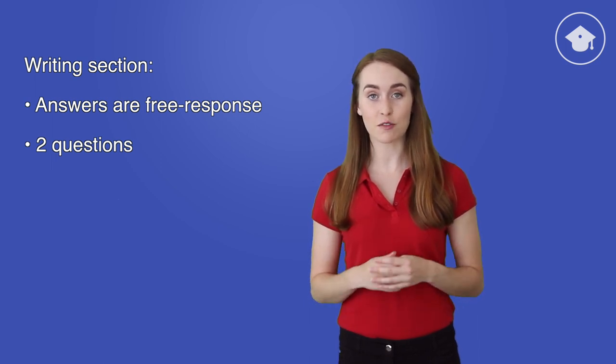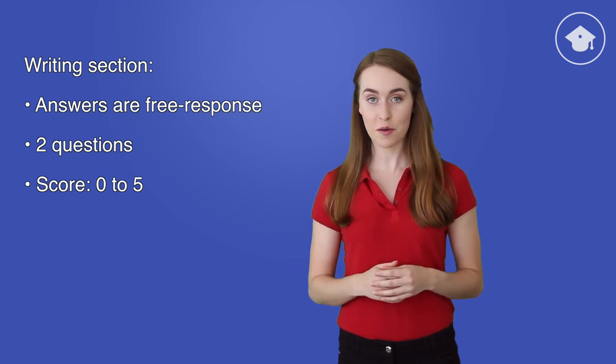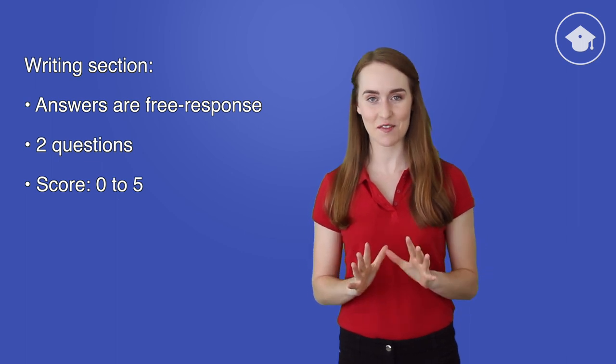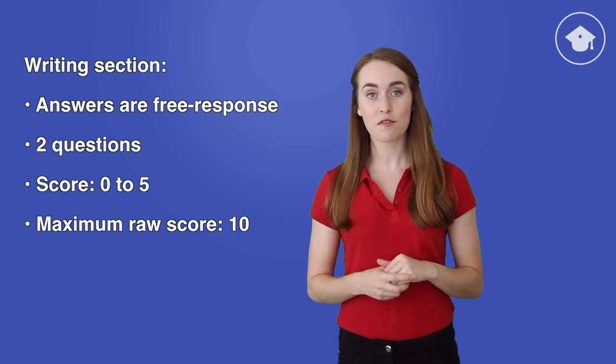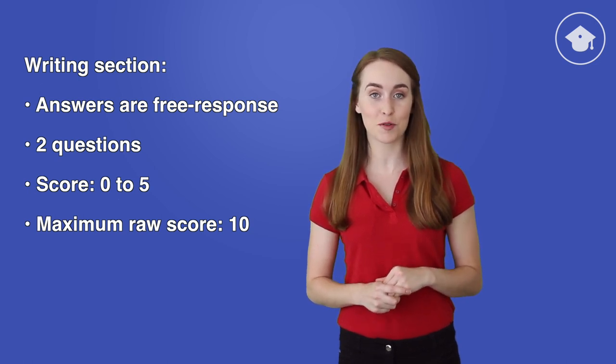For each answer, you'll get a raw score between zero and five. Zero is the worst possible answer, while five is the best. So you can get a maximum raw score of 10, five points for each of the two questions.